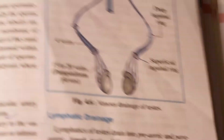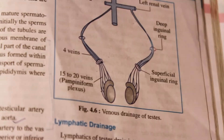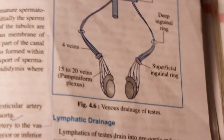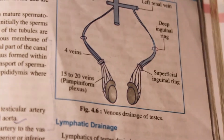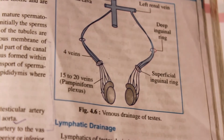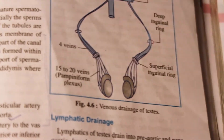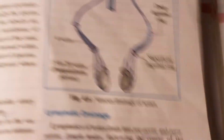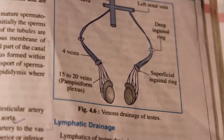The genital ducts are developed from the mesonephric ducts. This is all about the development of testis.